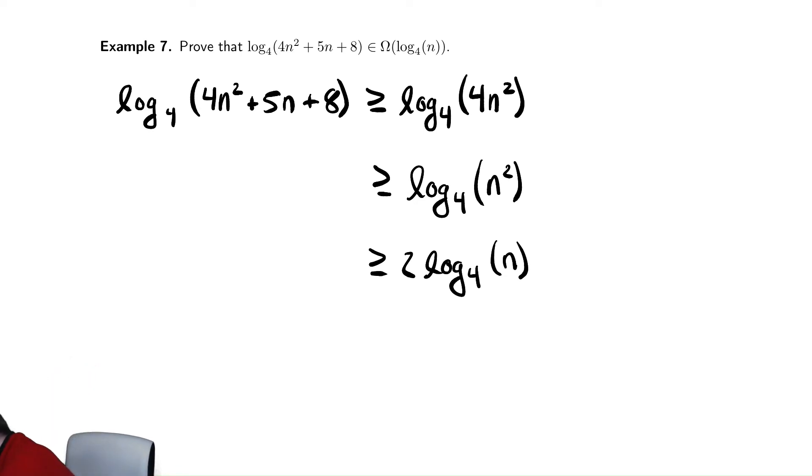So just as before, my constant is 2. And the how big does n have to be is 0 because there is no requirement on n here to make sure that this claim holds. Let's do this.